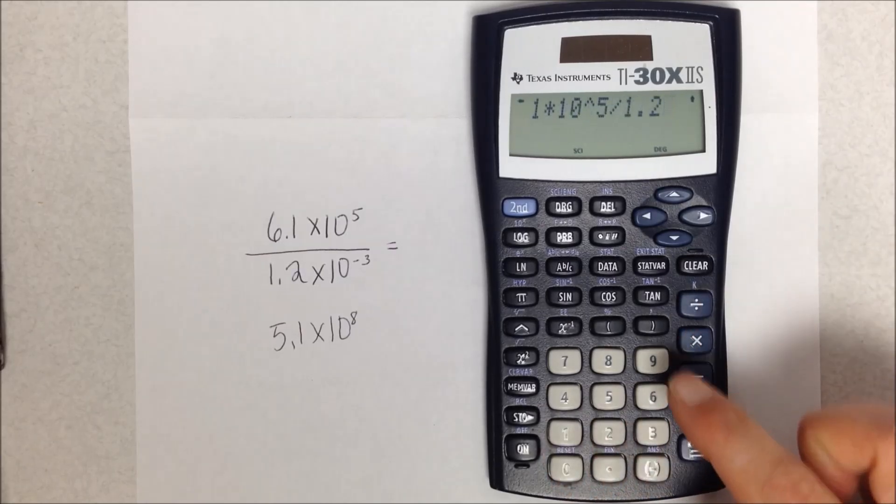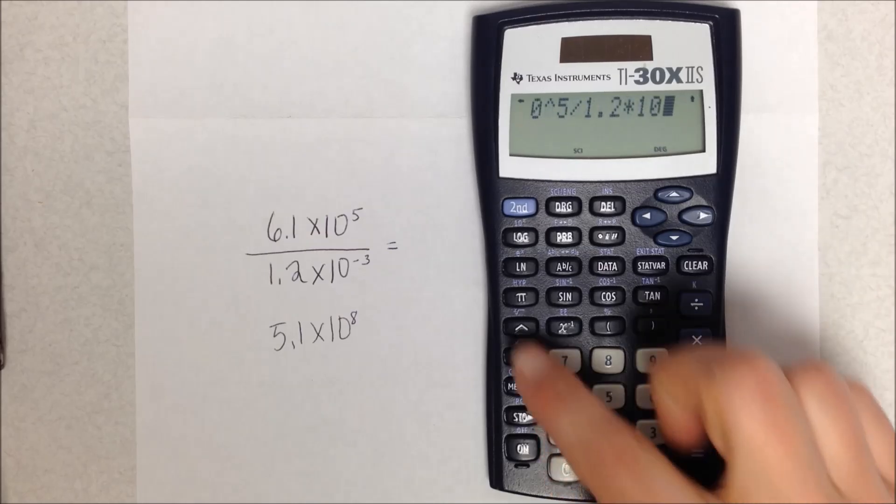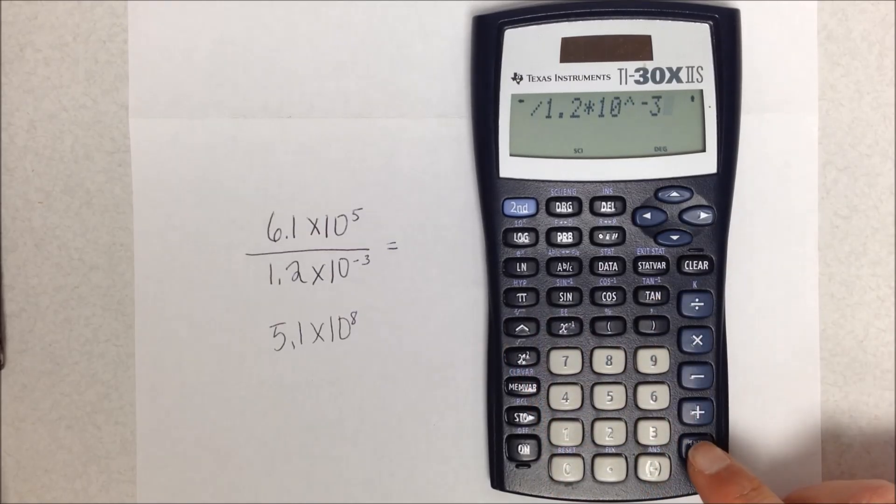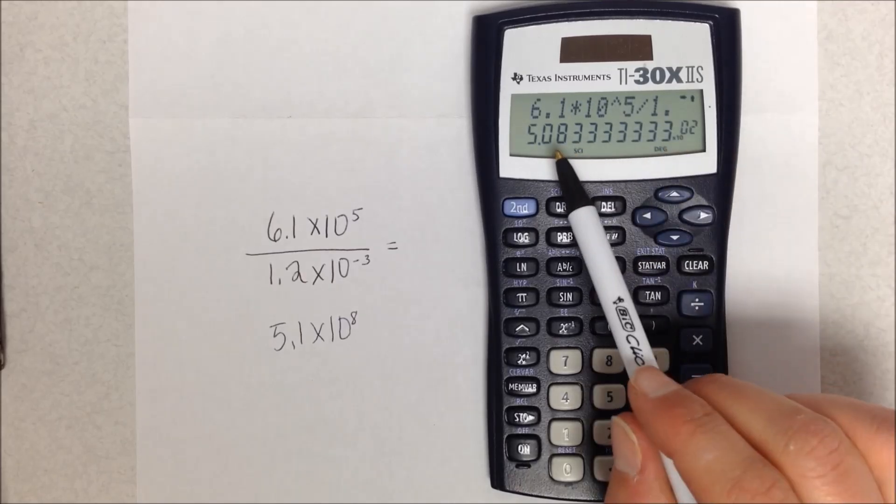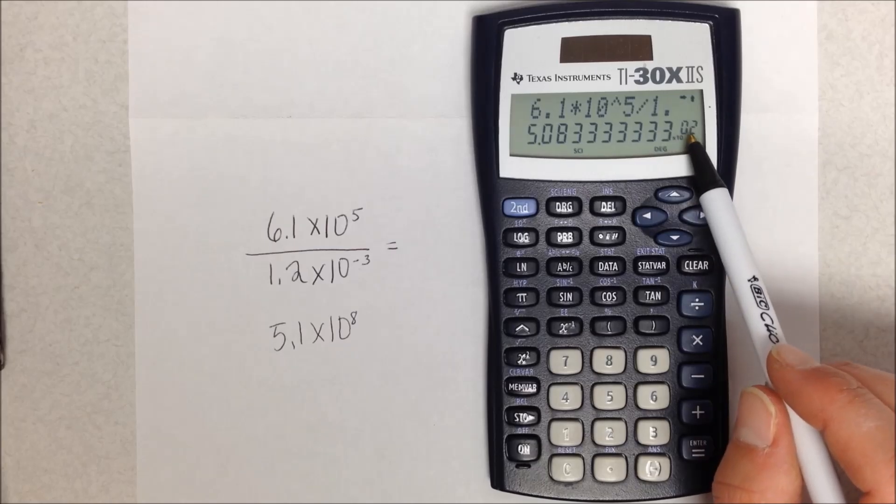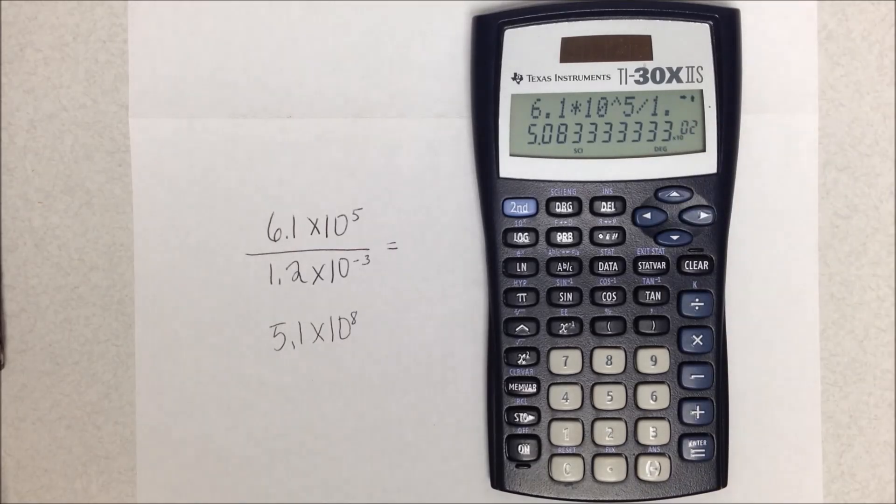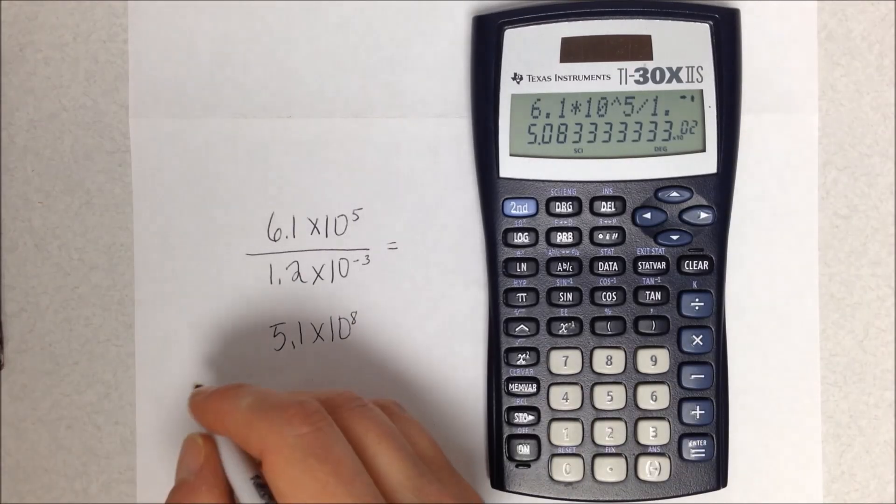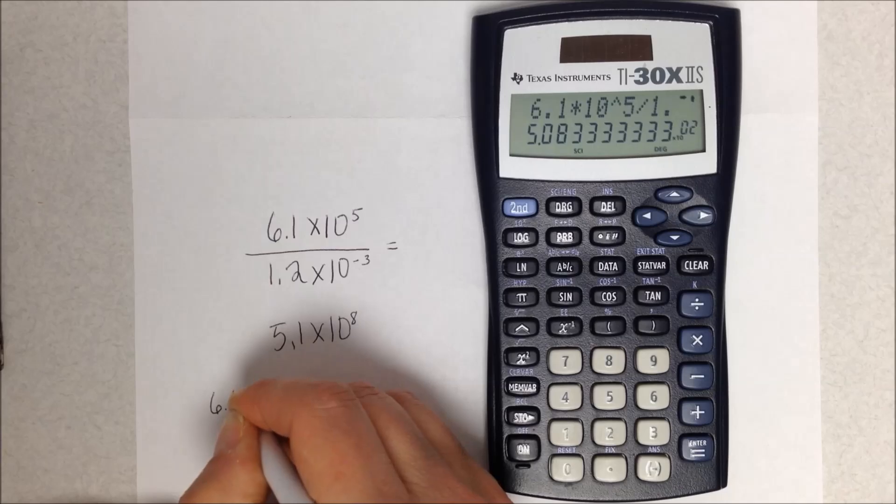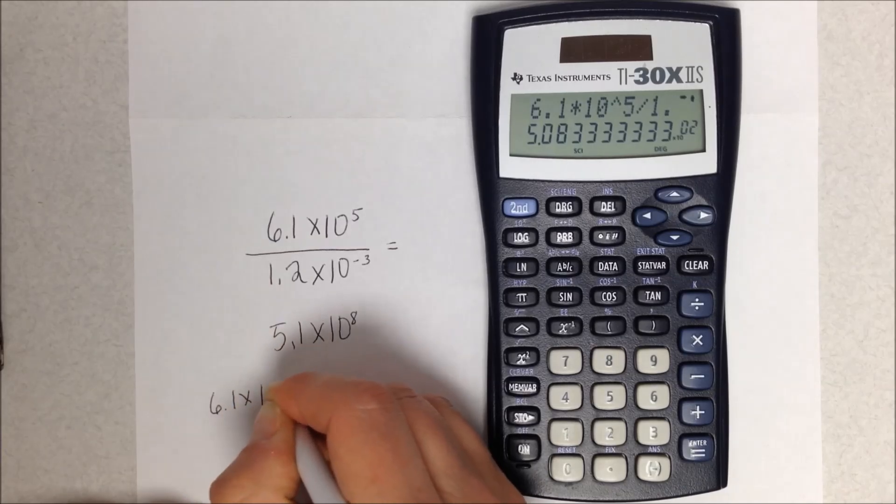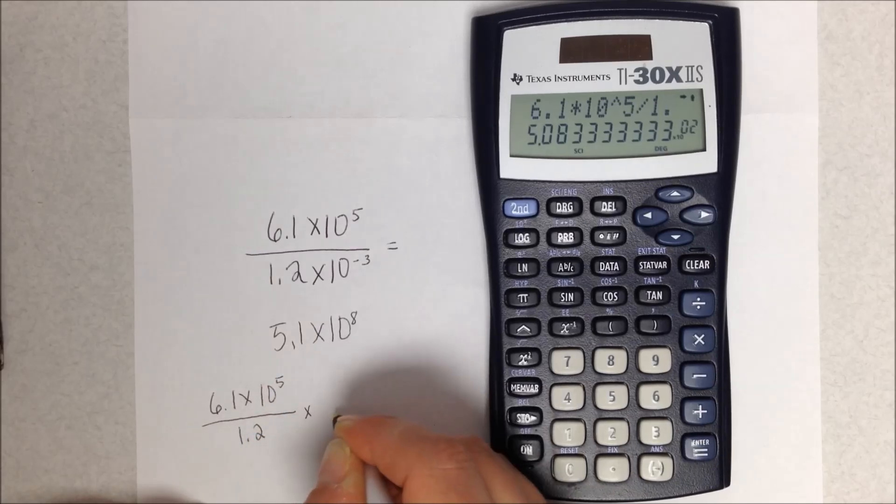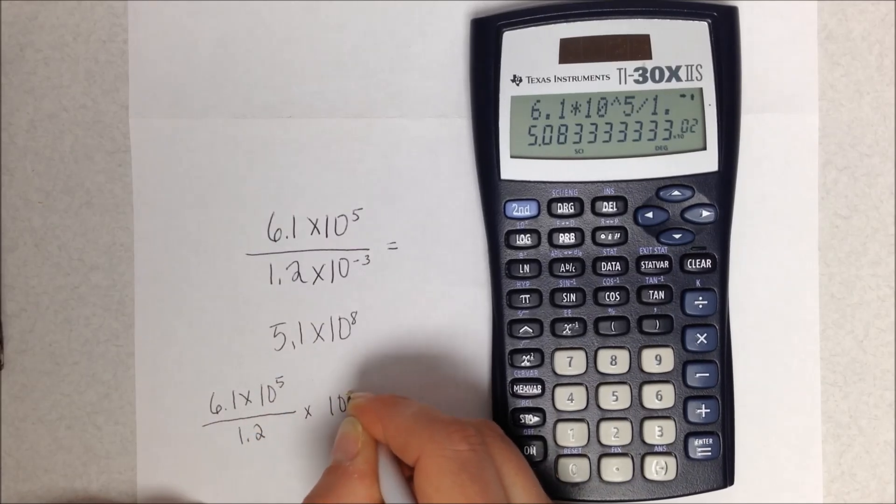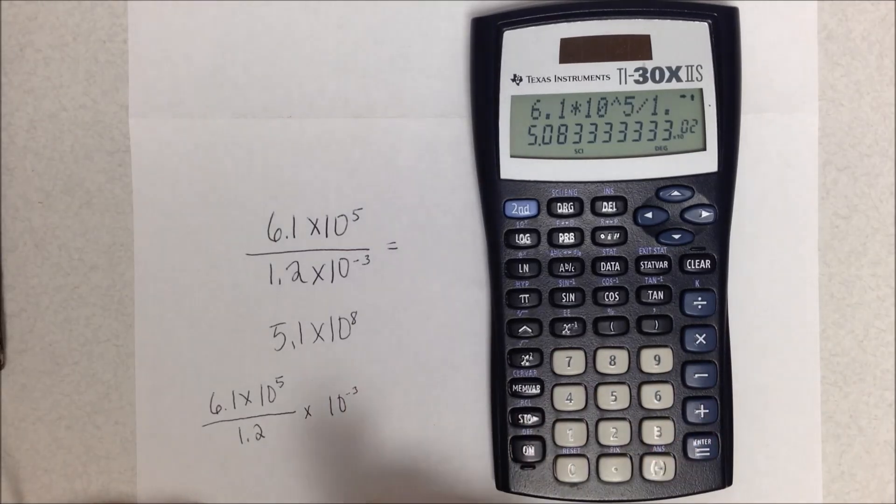Now when I hit the equal sign, I get my answer. It's in scientific notation, but note it's 5.1 times 10 to the second—a very different answer than what I saw before. And the reason for that is because what really happened was the calculator took 6.1 times 10 to the fifth divided by 1.2 and multiplied by 10 to the minus third, and that's not what we wanted to happen.